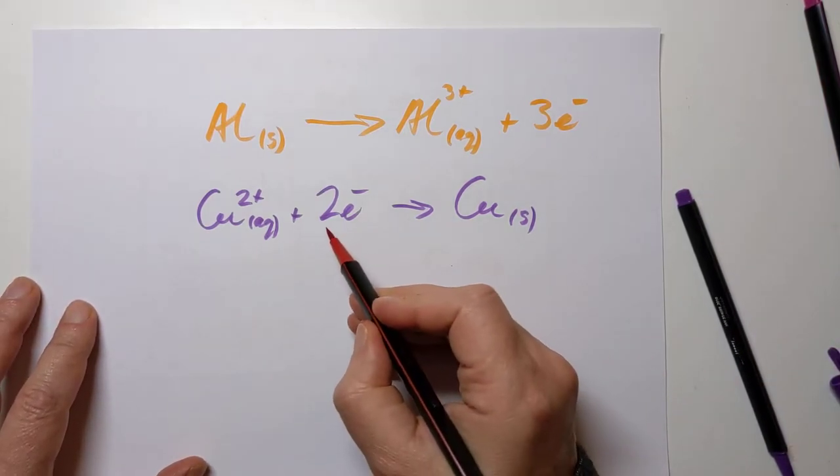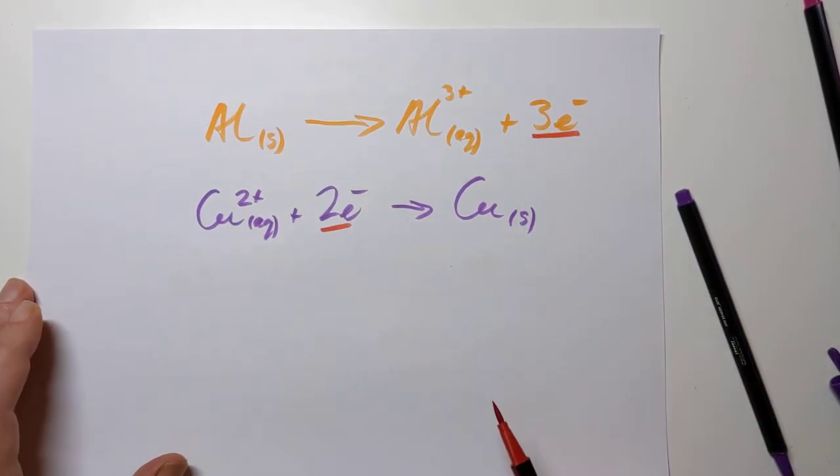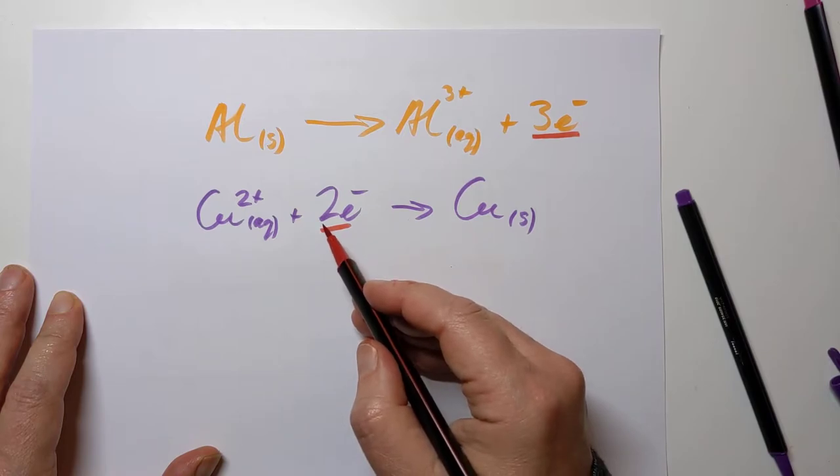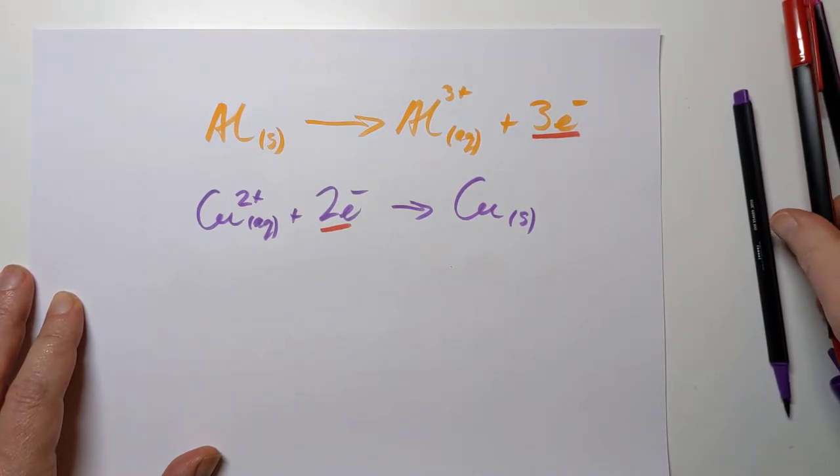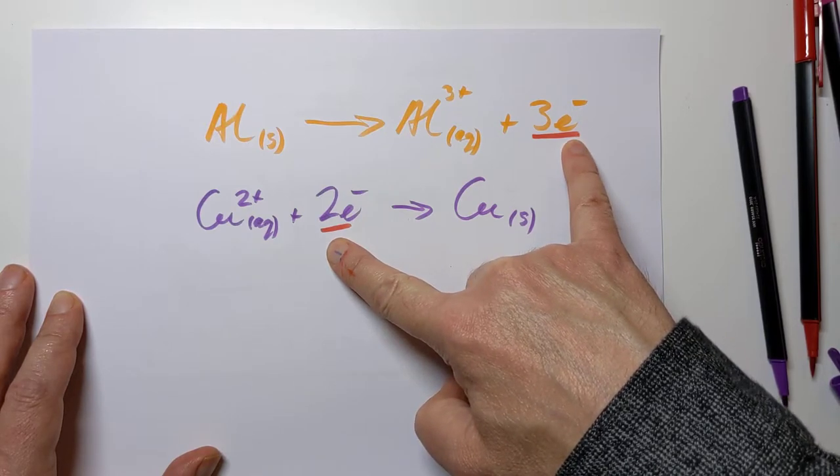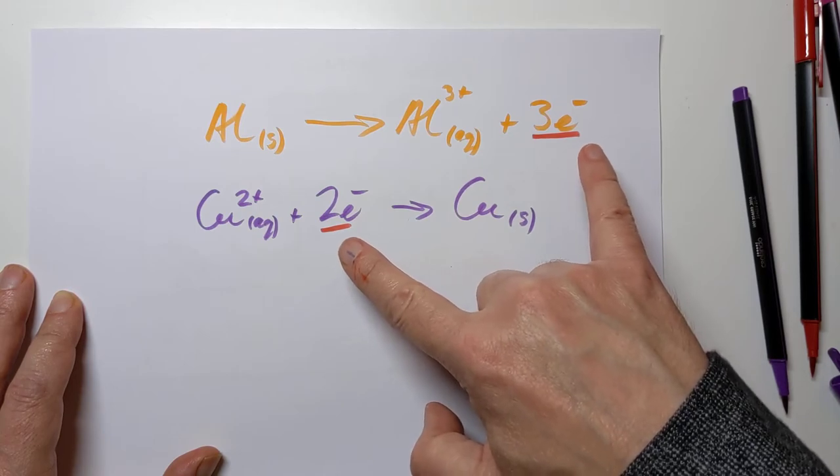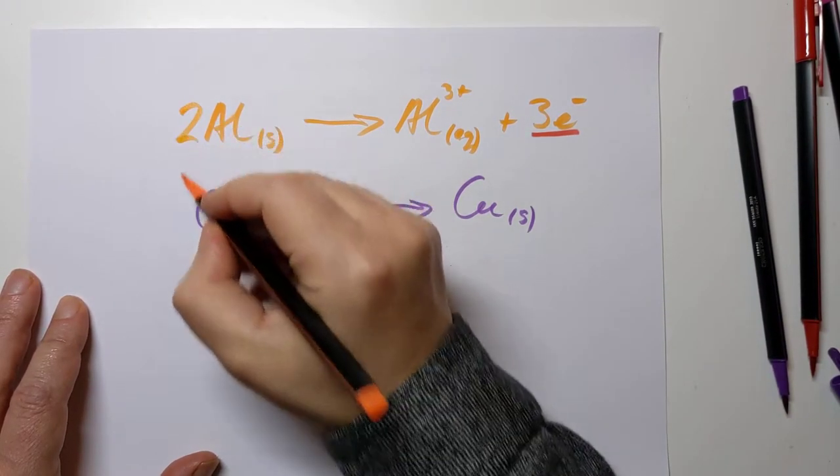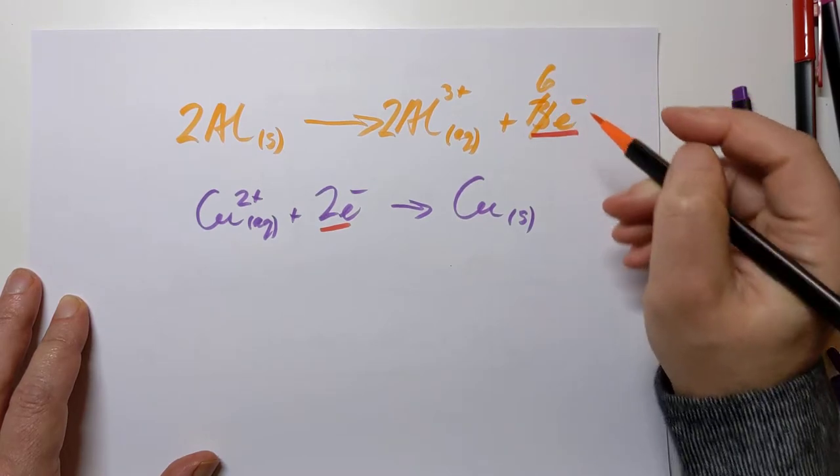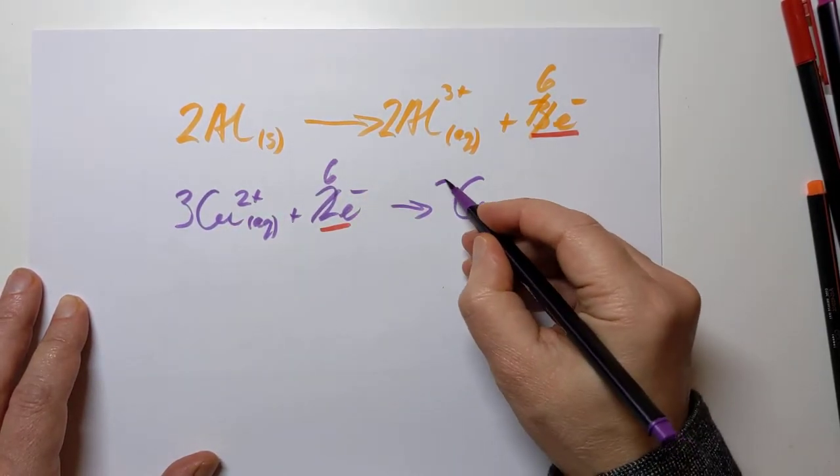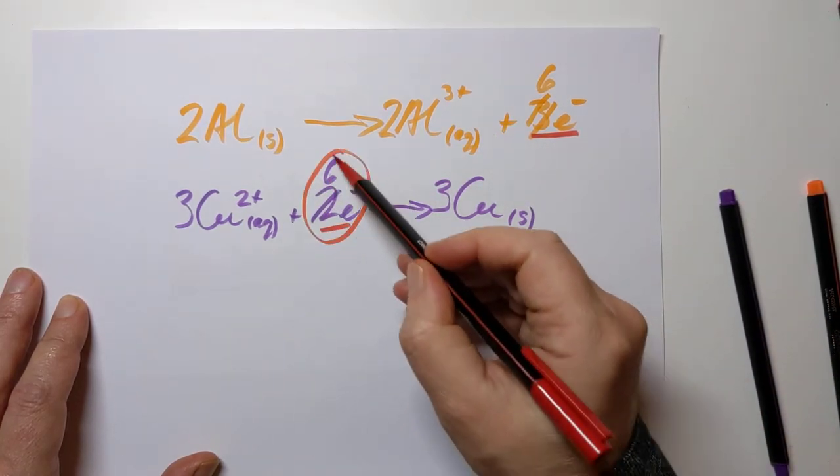Now, if you cast your minds back, you will see the problem. Two electrons are being gained, but three are being lost. You have a choice here. You could multiply the bottom equation by one and a half, because two times one and a half is indeed three. Many people don't seem to like fractions, it freaks them out a bit. So what you could do is you could try and make these two equal number of electrons, which is what we have to do. And I'm hoping you could perhaps see that if we bring them both up to six, then we can combine these two equations together and form the overall reaction. If we multiply the top equation by two, we have two aluminums here, two of these, and this becomes six electrons. And if we multiply the bottom equation by three, we'll have three of these, this becomes six, and we'll have three of these. Now we have the same number of electrons being lost and gained.